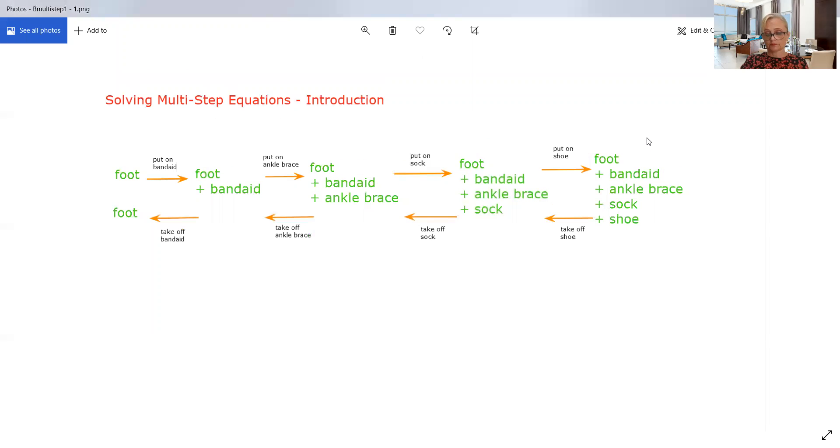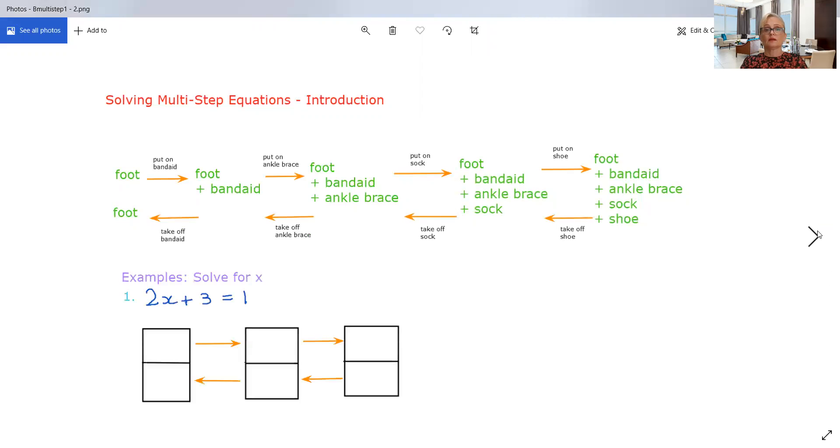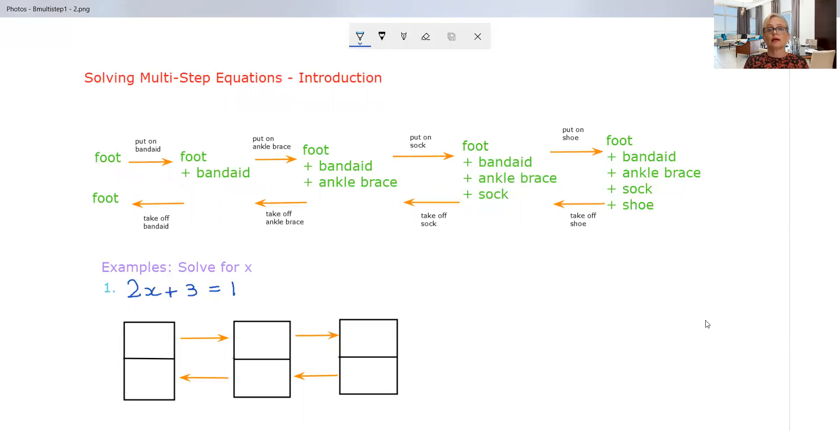So here we have an example where we've got 2x plus 3 equals 1. Let's do it the way we were doing in the previous video with the boxes, but I also want to show you how to do it without the boxes. So you've started with your x. What's happened to it first? Well, it's been multiplied by 2 to give us 2x. Then what's happened? We've added 3 and we've ended up with 2x plus 3.